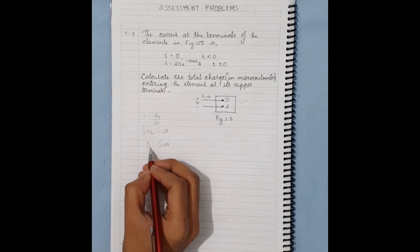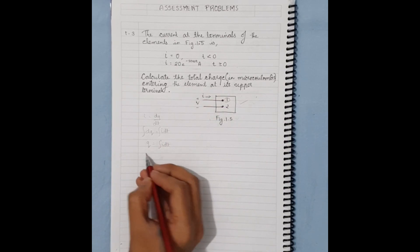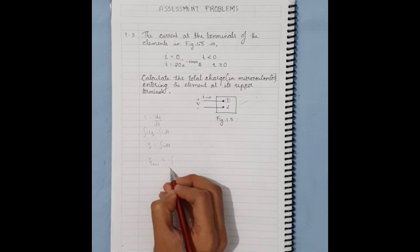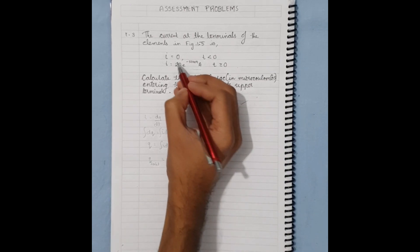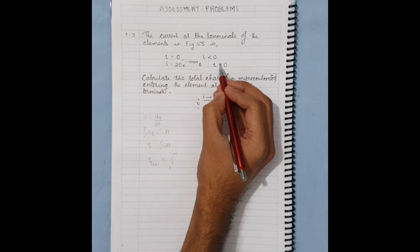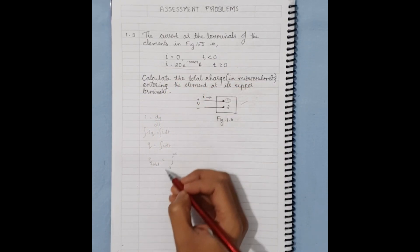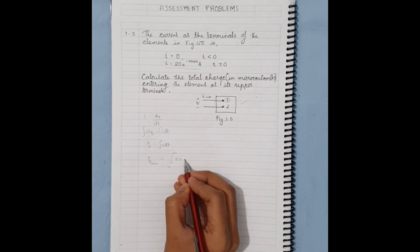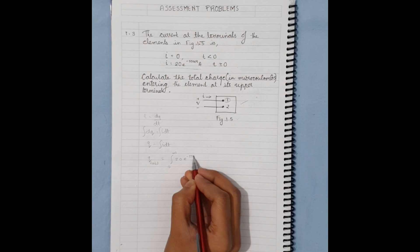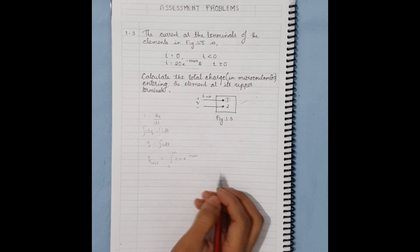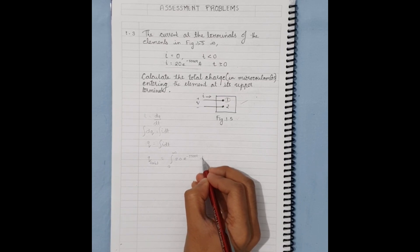We integrate from zero to infinity with this current, which is when time is greater than or equal to zero, and the current is 20e^(-5000t), with respect to dt.